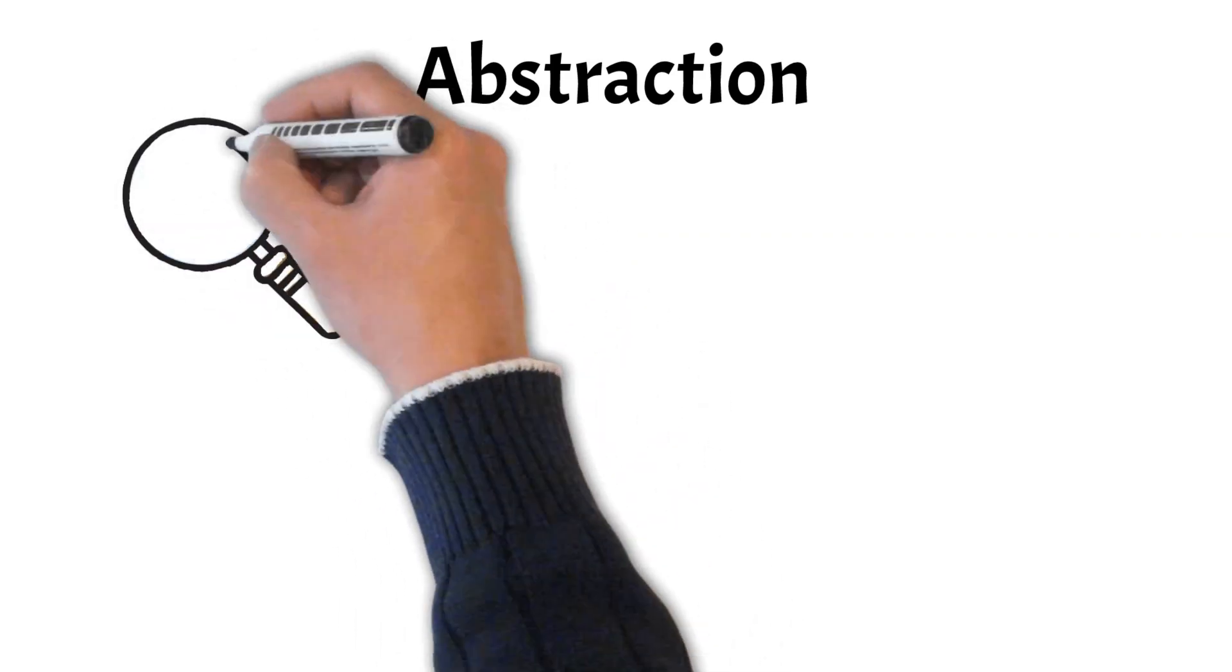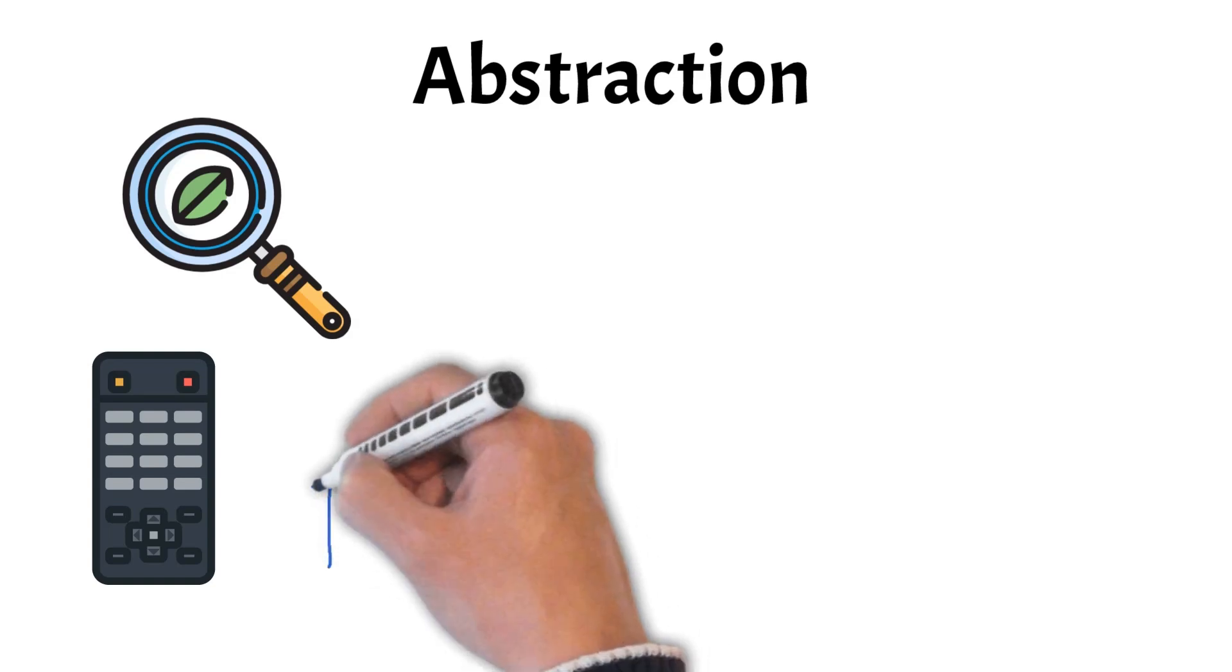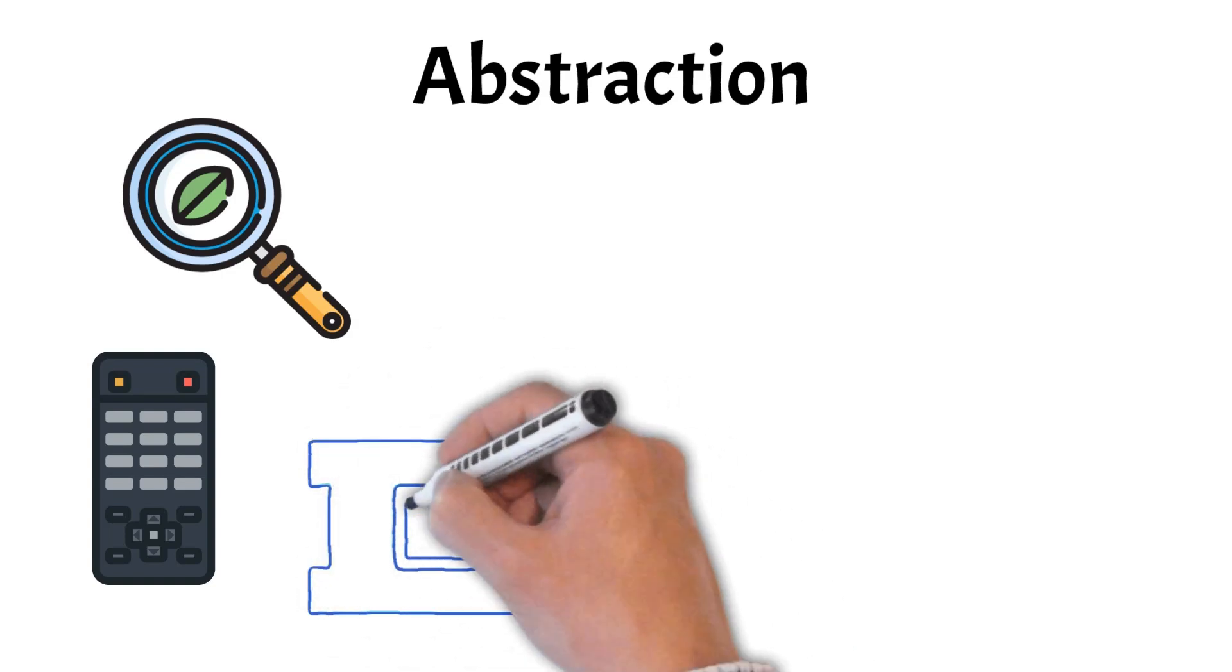And lastly, let's take a look at abstraction. Abstraction is a key idea in OOP that helps simplify complex systems by showing only the important parts and hiding the unnecessary details. Think of it like a TV remote. You only see the buttons to change the channel or volume, not the complex electronics inside.